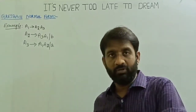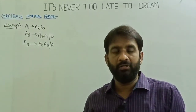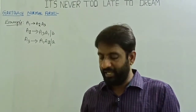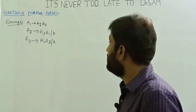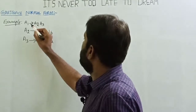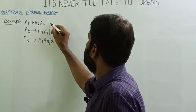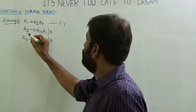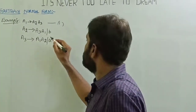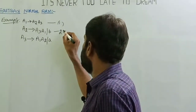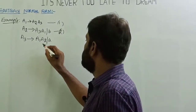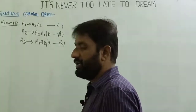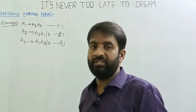Welcome back. Let's take one more example of how to convert a context-free grammar into the Greibach Normal Form. The given grammar is: A1 tends to A2 A3 (equation 1), A2 tends to A3 A1 | b (equation 2), and A3 tends to A1 A2 | a (equation 3). Convert this context-free grammar into the Greibach Normal Form.